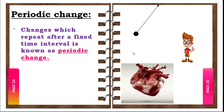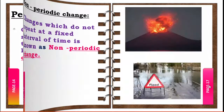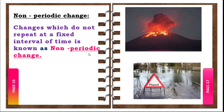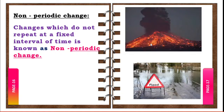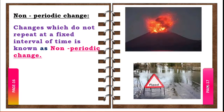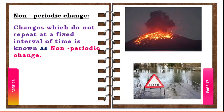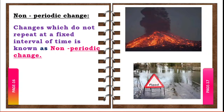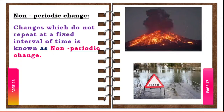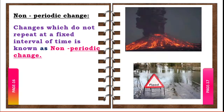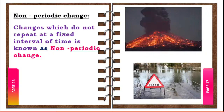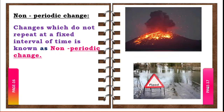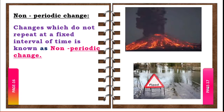Some changes do not occur at a fixed interval of time — they do not repeat at a fixed interval of time. These are known as non-periodic changes. For example, volcanic eruption, flood, blowing of wind, and earthquake may occur at any time and do not follow a regular interval of time. These are examples of non-periodic changes.